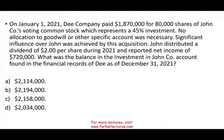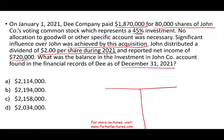Let's take a look at the first question. On January 1st, 2021, a company paid $1,870,000 for 80,000 shares of John Bolton stock, representing a 45% investment. No allocation to goodwill or other specific accounts was necessary, and significant influence over John was achieved by this acquisition. John distributed a dividend of $2 per share during 2021 and reported income of $720,000. What was the balance in the investment account as of December 31st, 2021? Basically, you have an investment account — investment in stock — and you need to find its ending balance.